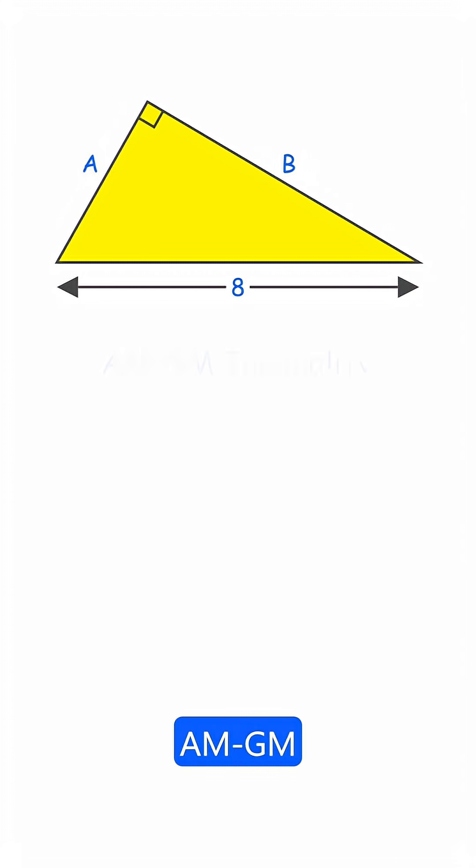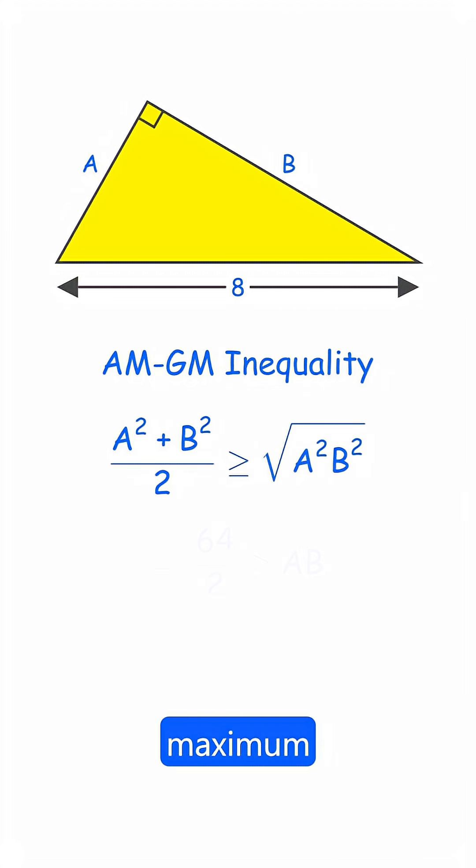Now, we use the AM-GM inequality on A squared and B squared, and we find that the maximum value of AB is 32. That makes the maximum possible area of the triangle 16.